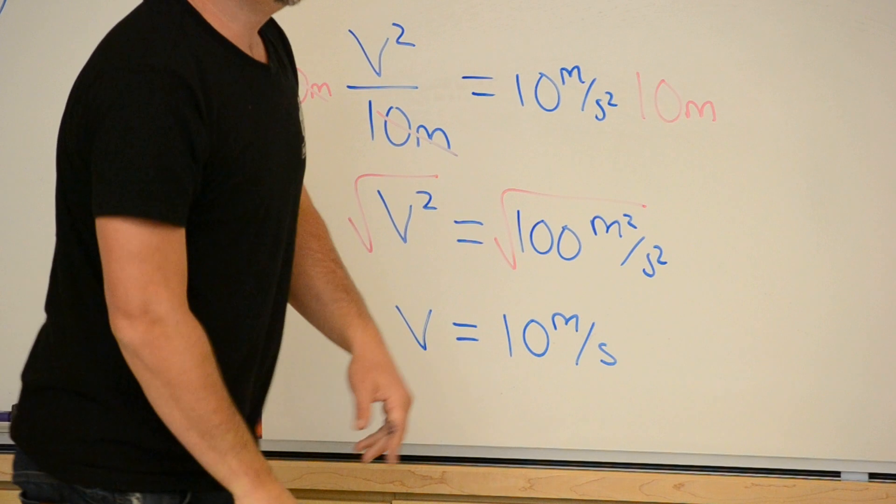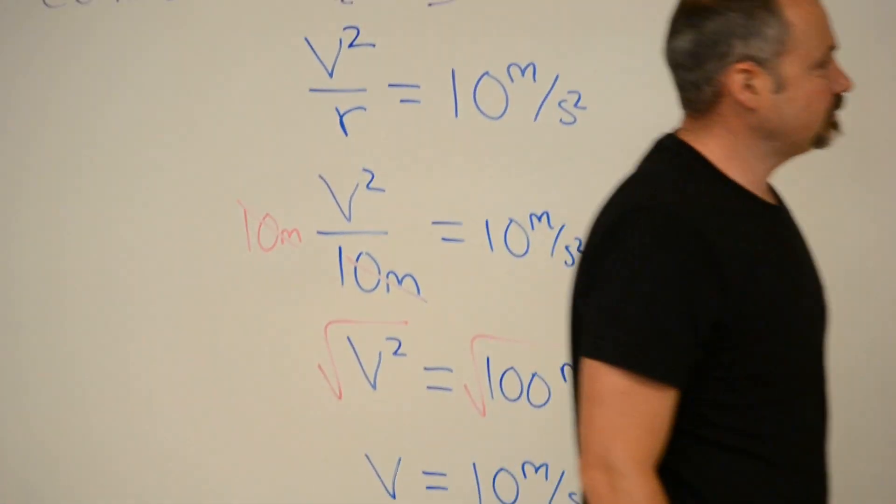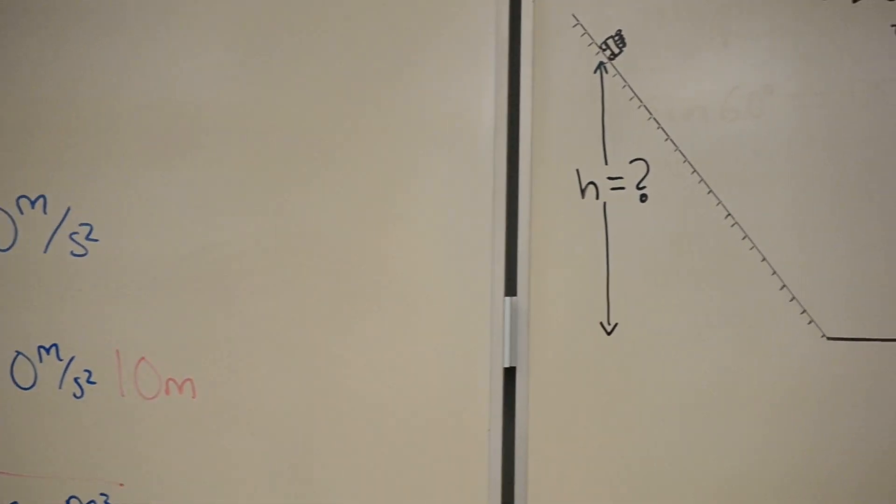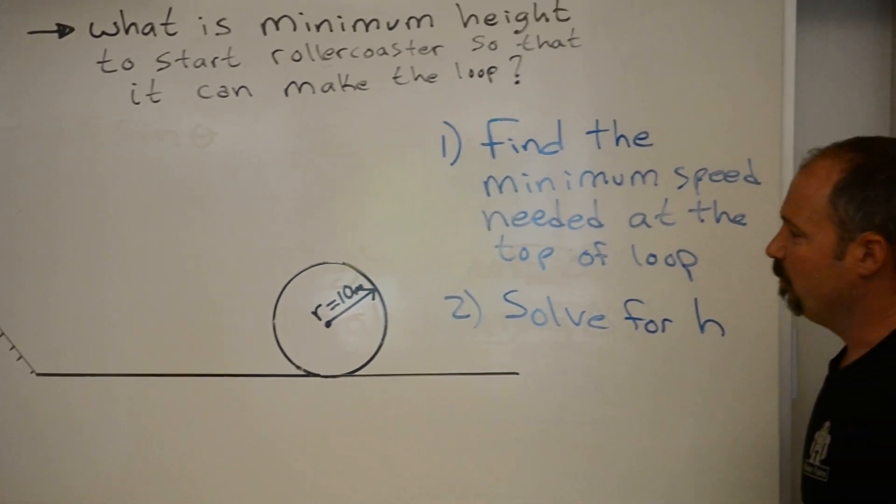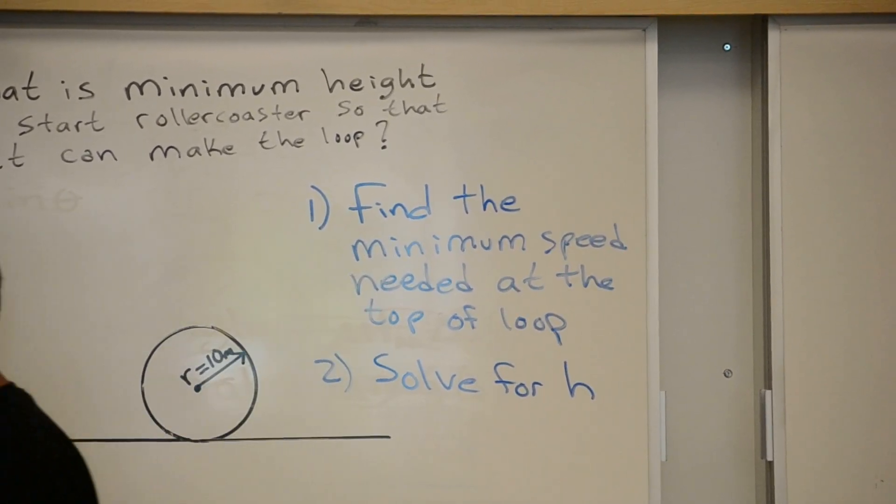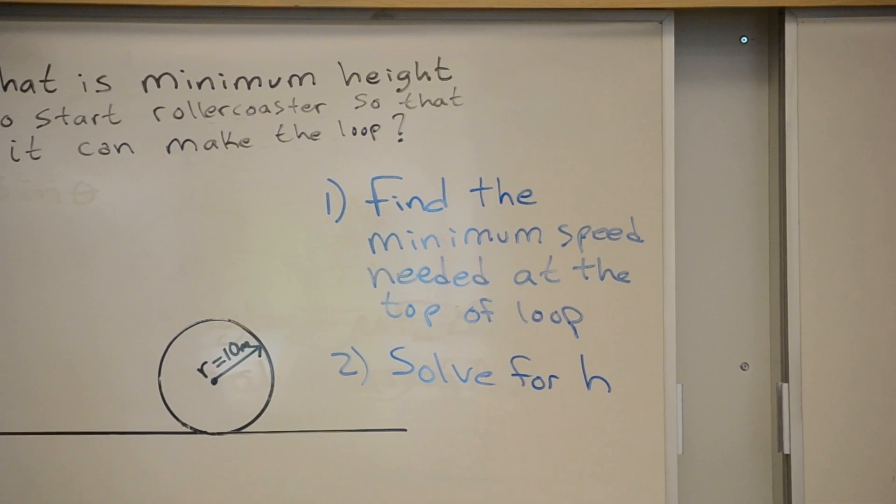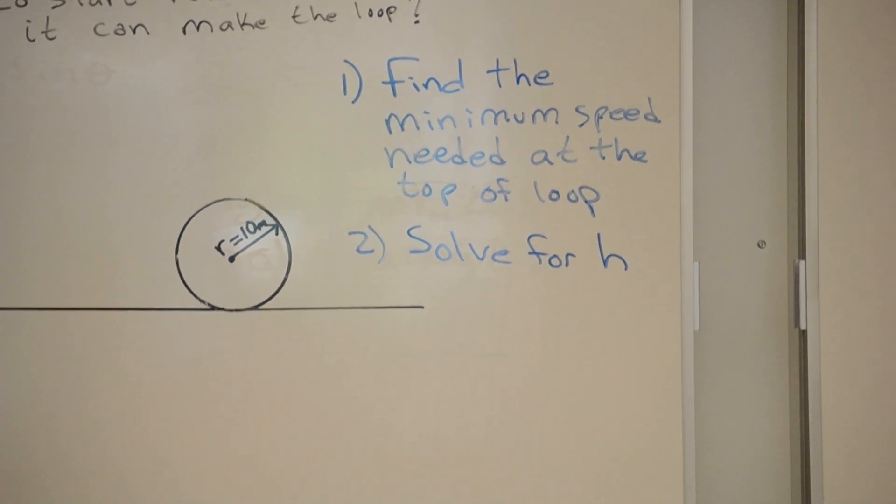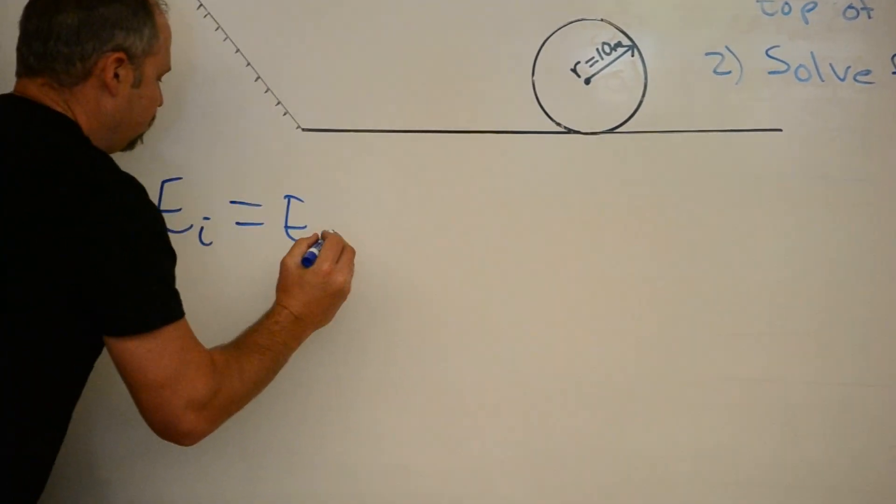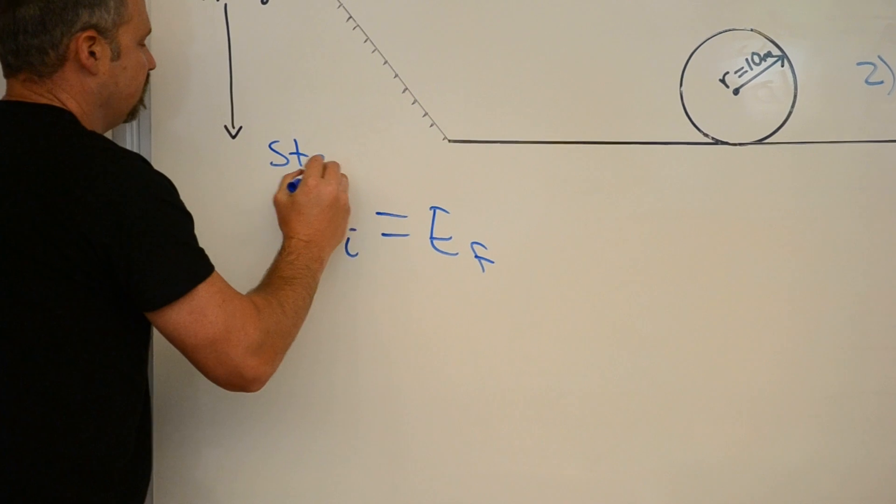Excellent. Step one. Now let's solve for that height. We use energy conservation. Initial energy equals the final energy. Let me write our step two here.